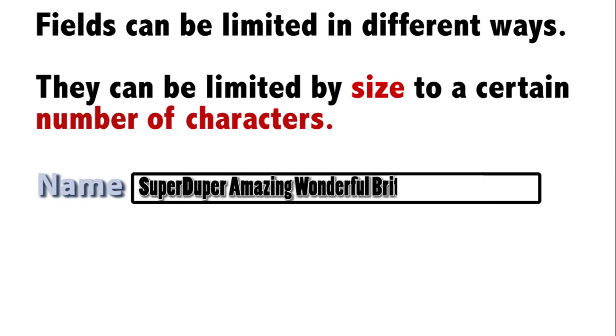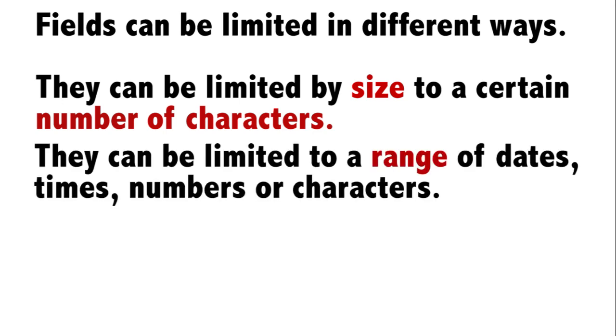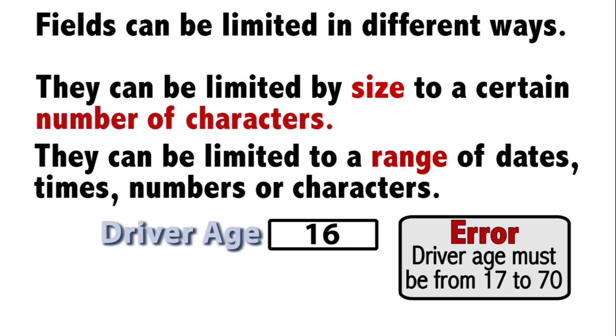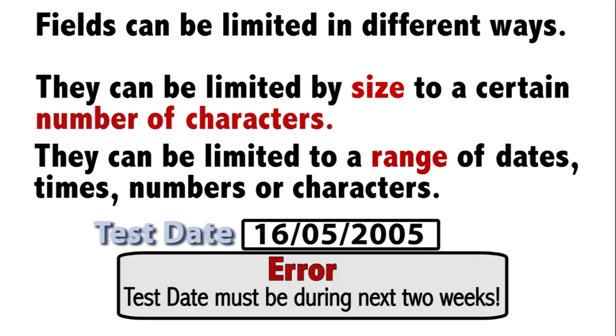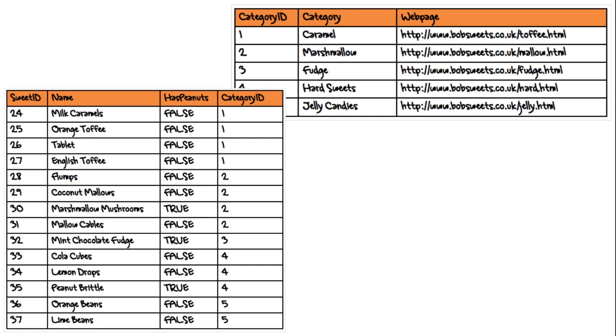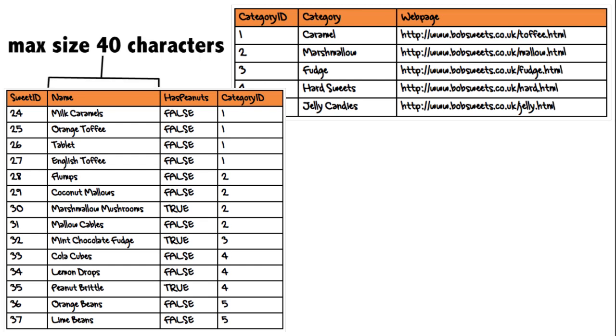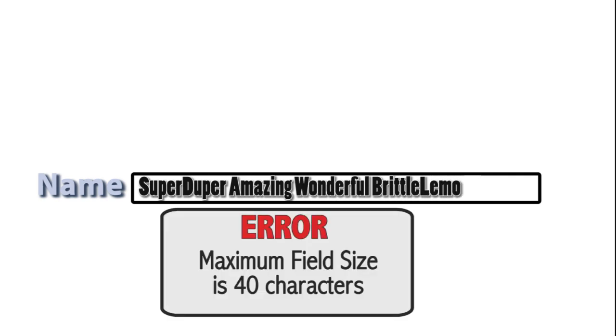The fields in Bob's database have a specific length or can store a specific range of numbers, dates, times, or characters. The name field of his sweets table has a field length of 40 characters, so the field cannot store more than 40 characters. If Bob were to enter 41 characters, he would receive an error message from his database management software and be told to try again.